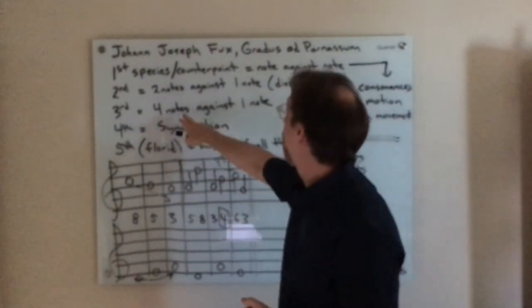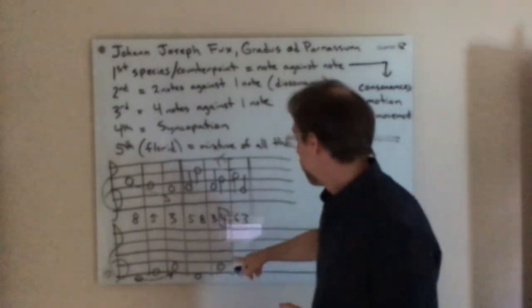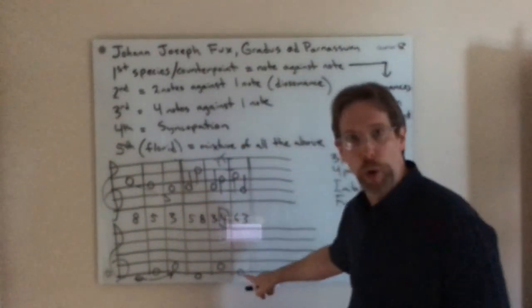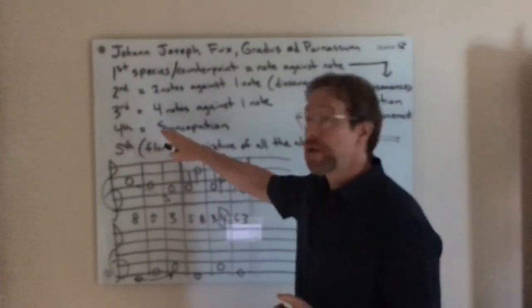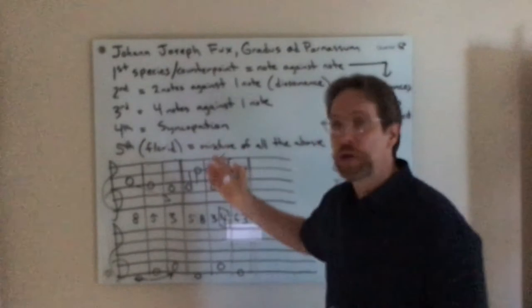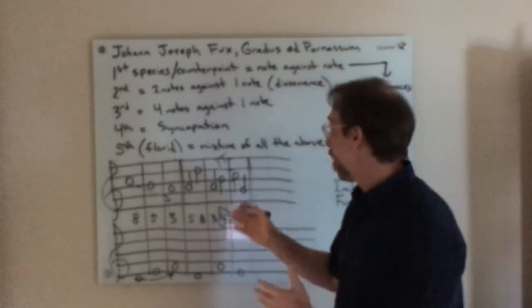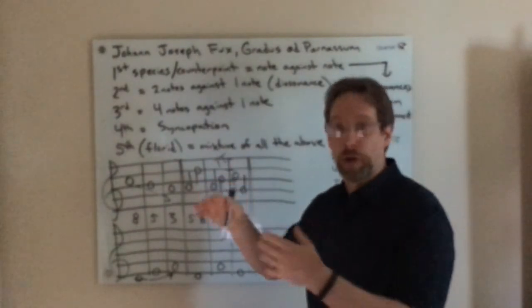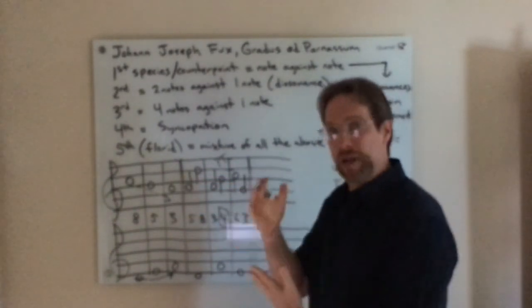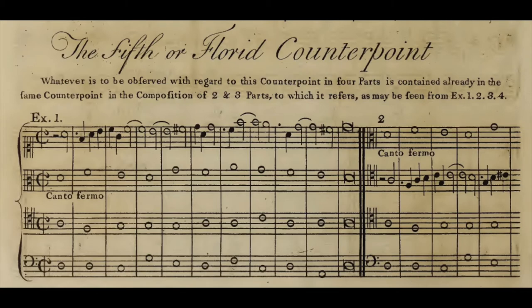So that's second species. Then you get to third species, where you have four notes against one note. So you can just imagine I'll have whole notes here and have quarter notes moving on top of that. When you get to fourth counterpoint or fourth species, you start dealing with syncopation, where notes are being tied over bar lines or in the middle of a bar in ways that are syncopated. And then finally, you get to what Fux calls florid counterpoint or fifth counterpoint, where it's a mixture of all of the above.